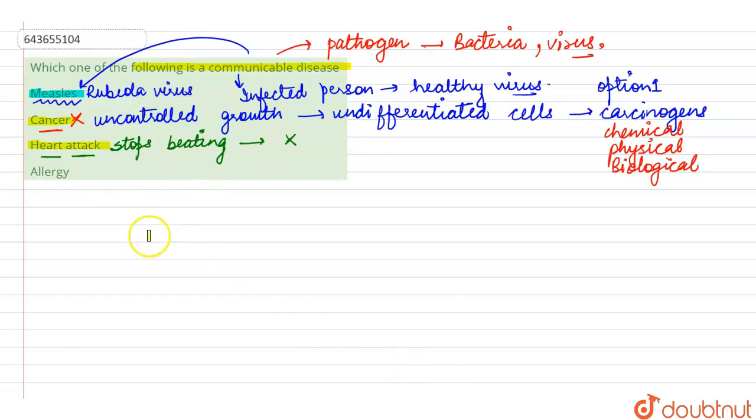Talking about the fourth option here, that is allergy. Allergy is the exaggerated response of the immune system to certain allergens which are present in the environment. And these allergens can be of many types, it can be pollens, it can be dust, it can be mites, cold.